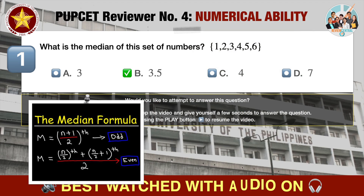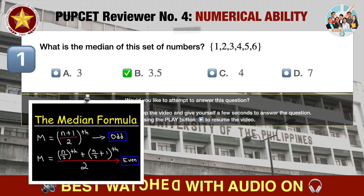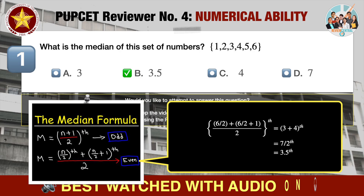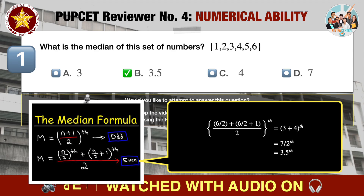There are actually two formulas to remember to find the median of any given set of numbers. If the number of values in the set is odd, use: median equals (n + 1) / 2, where n is the number of values. If the number of values in the set is even, use: median equals [(n/2) + (n/2 + 1)] / 2. There are six values in our given set, so we use the second formula: (6/2 + (6/2 + 1)) / 2, which gives us 3.5. Note that the result of the formula is not the value of the median itself, but the position of the median — halfway between the third and fourth values.